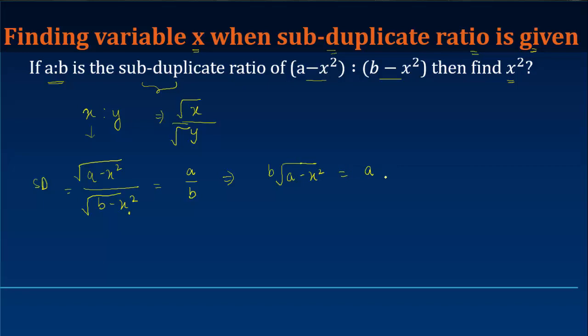If we square both of the sides, we get b² times (a minus x²) is equal to a² times (b minus x²).